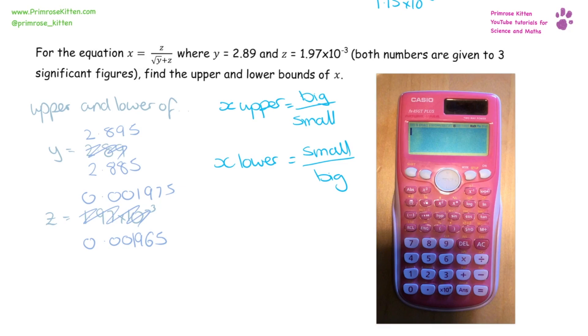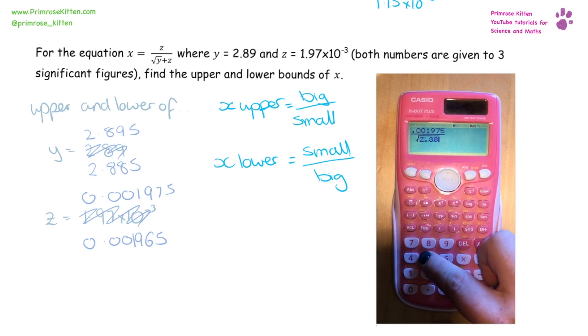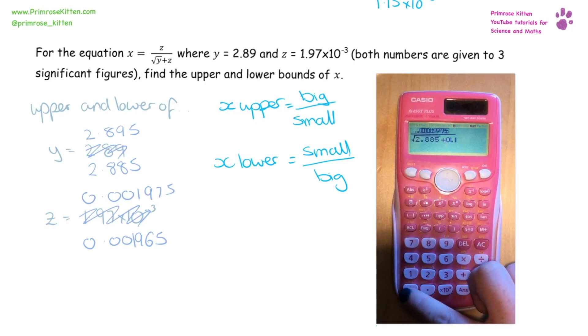So we can pop those numbers into our calculator, and we can see we're going to do the upper bound first of all, putting the big numbers on top and the smaller numbers on the bottom, popping those into our calculator, making sure that you're using your calculator properly so that we don't get confused with anything.